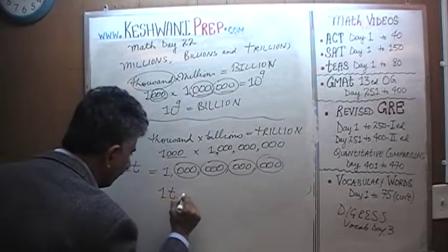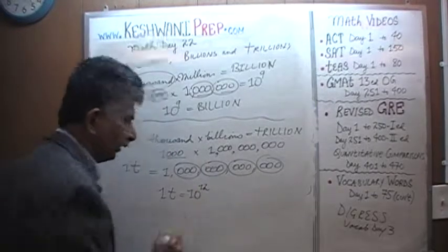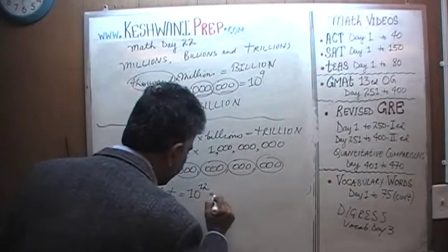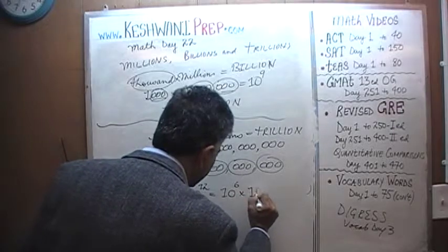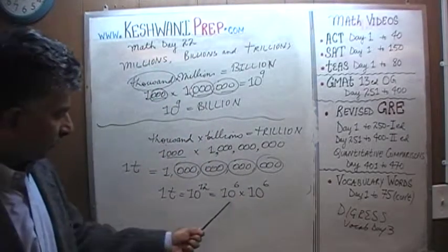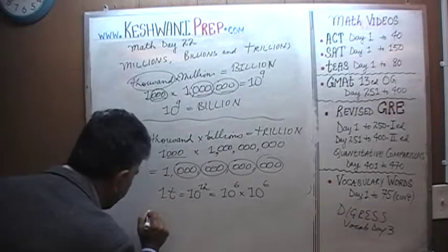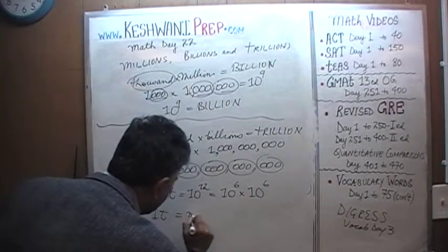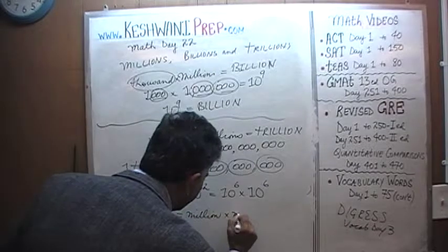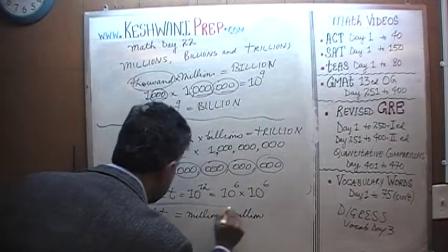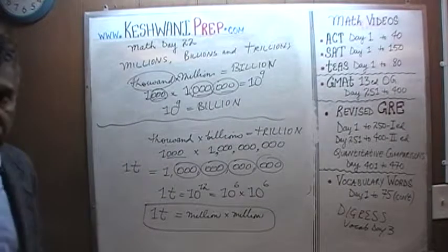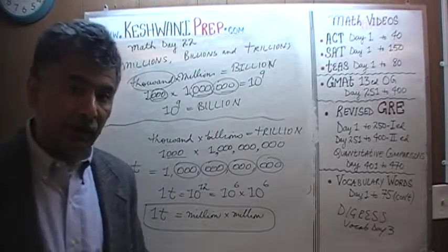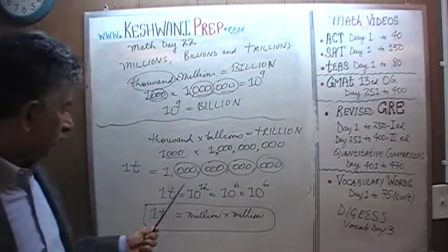Therefore, 1 trillion is 10 raised to 12. And since 10 raised to 12 can be written as 10 raised to 6 times 10 raised to 6, and 10 raised to 6 is a million, what we've learned is that 1 trillion is a thousand billion, which is the same as a million million. If you had a million million, that would make a trillion — which is 1 with 12 zeros.